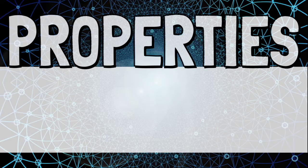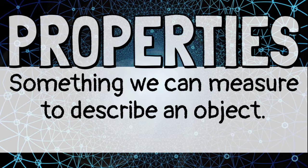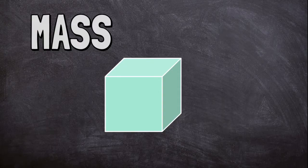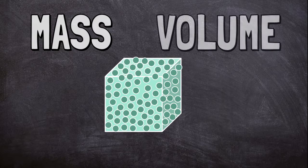Properties are something we can measure that help us describe an object. Some properties that help us figure out state of matter are shape, mass, and volume. Mass is the amount of matter in an object. Volume is how much space the matter takes up.